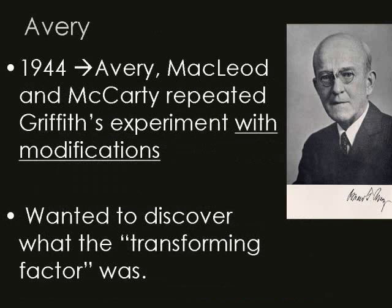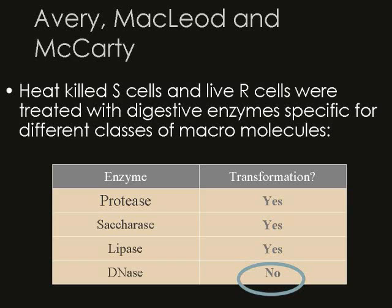Avery, in 1944, wanted to repeat Griffith's experiment with some modification. He was interested in finding out what the transforming factor was — what was carrying the genetic material of heredity. So what Avery did is he took the heat-killed S cells and the live R cells, and put them with different digestive enzymes that were designed to kill specific biological molecules.